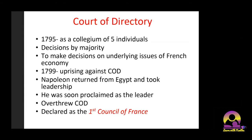Even after the king was assassinated and the Jacobins established their Reign of Terror, the problems that sparked the French Revolution remained unsolved. The National Assembly established the Court of Directory — five individuals who would solve the problems step by step. But in five years, nothing happened; they themselves became corrupted and people started uprising against them. Napoleon returned from Egypt, took leadership of the people against the Court of Directory, overthrew it, and declared himself the First Consul of France.